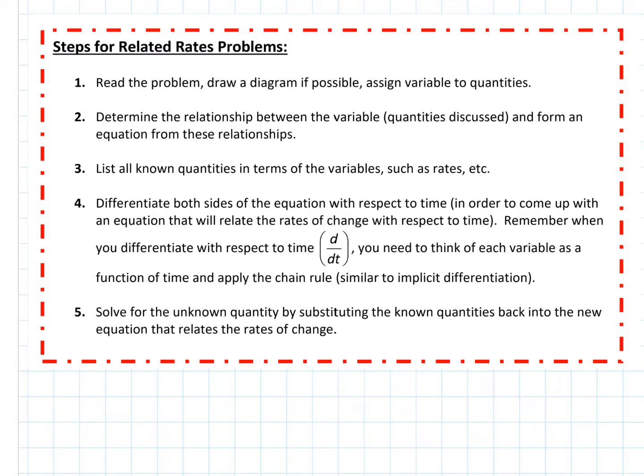Let's continue our section on related rates. Here are the steps for how we're going to approach related rates problems. First, read the problem. Second, determine the relationship — write a mathematical equation between the quantities. Steps one and two go hand in hand: read the problem, draw a picture if we can, assign variables, and then decide what the relationship is between the variables.